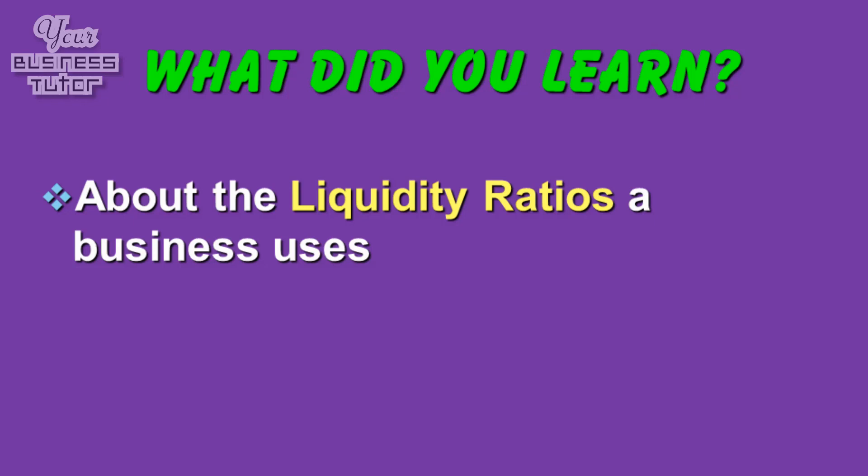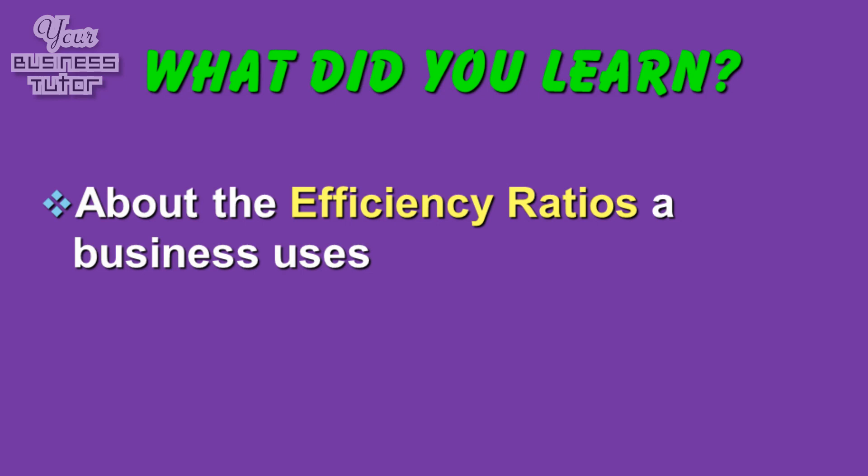So what did we learn in this presentation? First, we found out what liquidity and efficiency mean. Then we explored liquidity ratios a business could use. And finally, we looked at efficiency ratios a business could use. Looking at profitability, liquidity, and efficiency ratios plays an important part in judging an organisation's financial performance. However, as we will find out in the next part of this series, although ratio analysis offers a number of benefits, a business must also be aware of its limitations so that the conclusions drawn from results are not misleading.